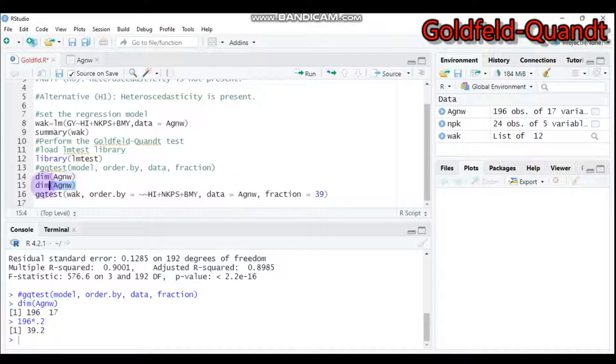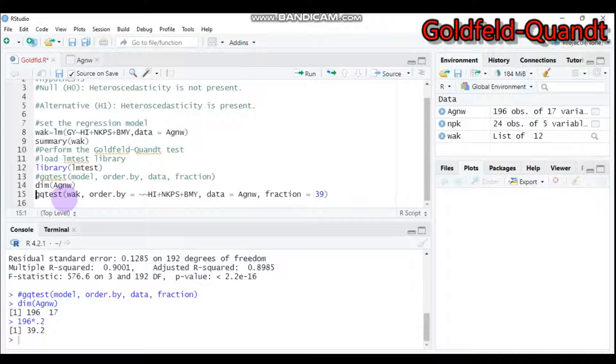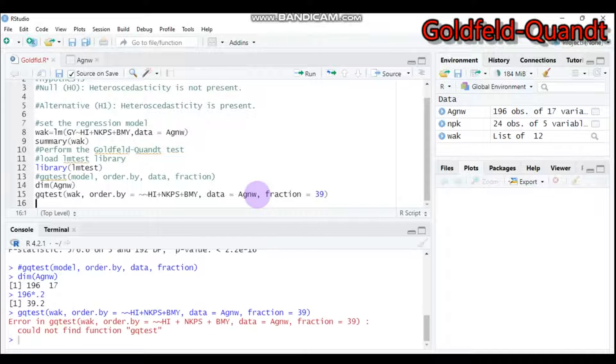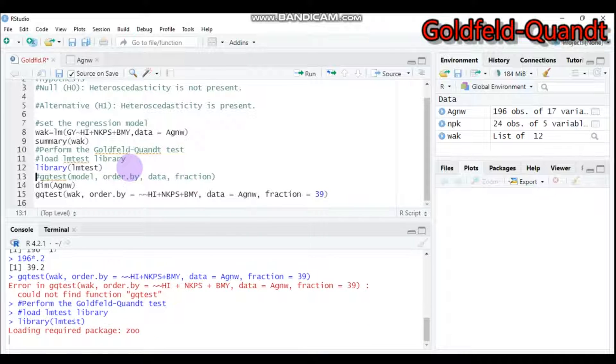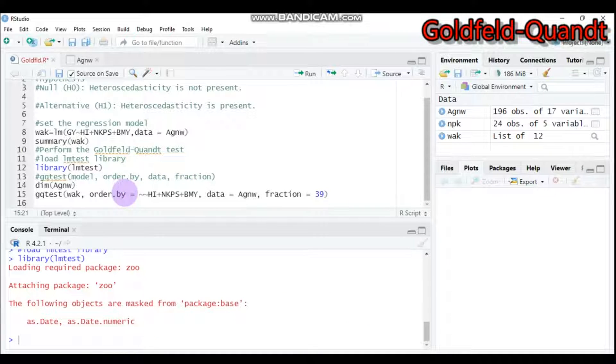By this way, you can check your observation. Then let's feed our values. You have to use the gqtest function, then our model using linear regression. Order.by is the predictors HI, NKPS, and BMW. Our data name is AGNW, and the fraction is 39, which is 20% of our total observation. Type this and submit to R Studio. It's not available because we're not loading the package. Let's run this one.